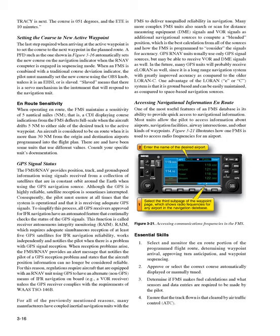GPS signal status. The FMS/RNAV provides position, track, and ground speed information using signals received from a collection of satellites that are in constant orbit around the Earth when using the GPS navigation source. Although the GPS is highly reliable, satellite reception is sometimes interrupted. Consequently, the pilot must ensure at all times that the system is operational and that it is receiving adequate GPS signals. To simplify this process, all GPS receivers approved for IFR navigation have an automated feature called Receiver Autonomous Integrity Monitoring (RAIM) that continually checks the status of the GPS signals.